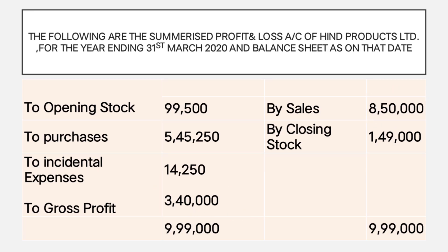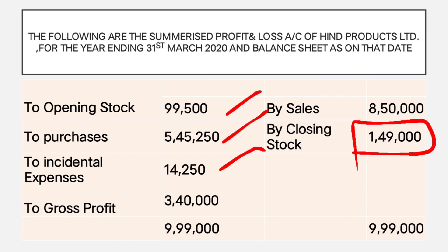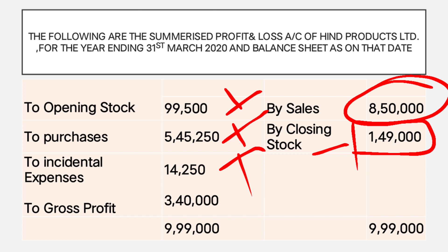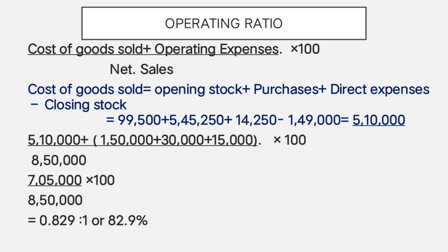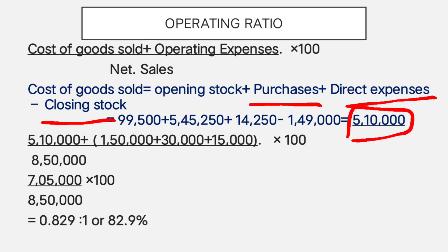Cost of goods sold equals opening stock plus purchases plus direct expenses minus closing stock. That is 99,500 plus 5,45,250 plus 14,250 (incidental expenses) minus 1,49,000 (closing stock), giving cost of goods sold as 5,10,000.